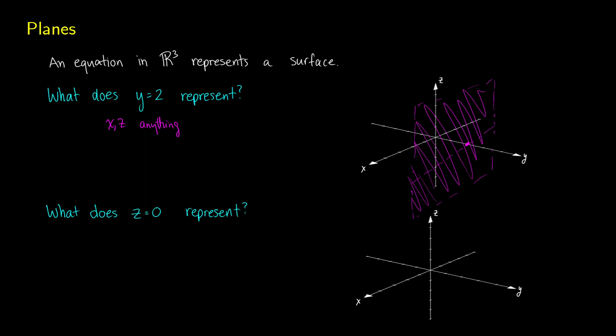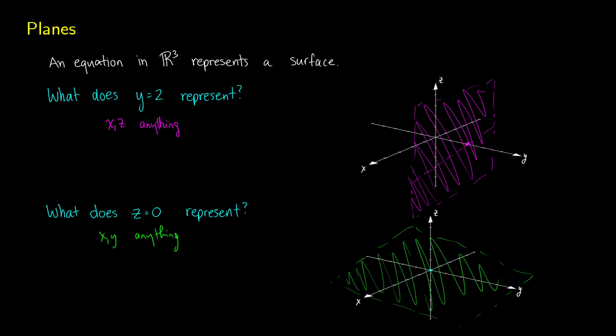What if we say z = 0? What that means is we're not going up or down in our third dimension — we're going through the x and y axis. This says x and y can be anything, but the z point has to be 0. So it is a flat surface that covers all x and y values at the single layer where z equals 0.